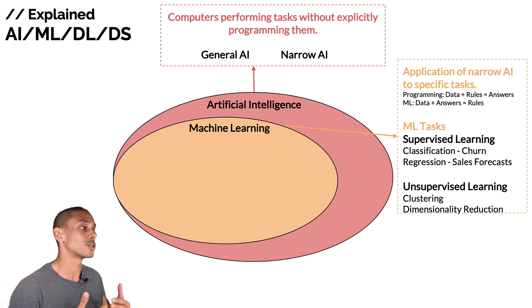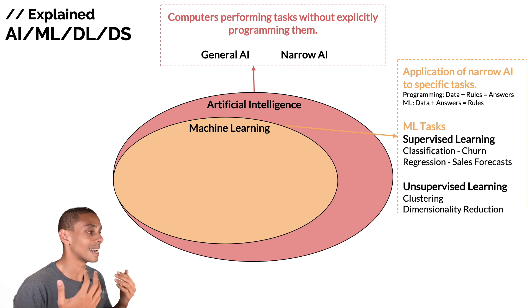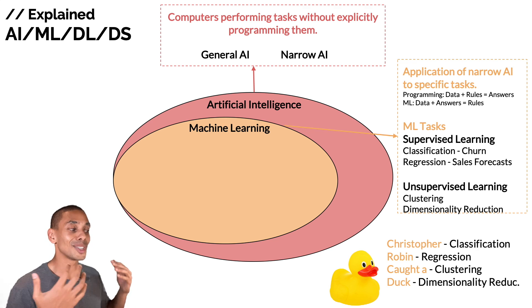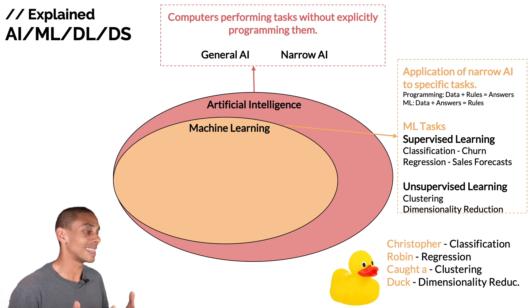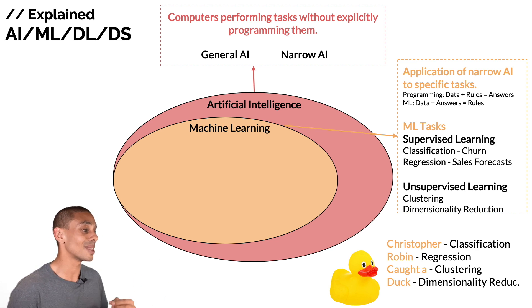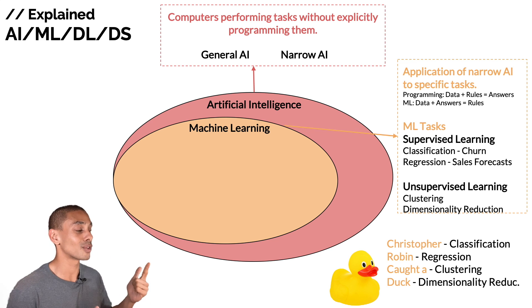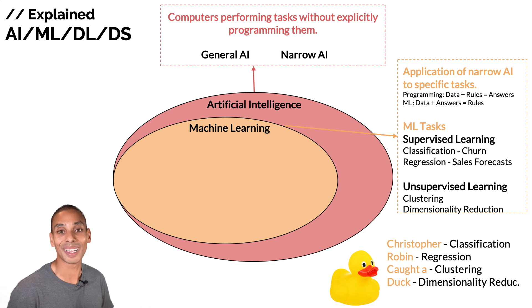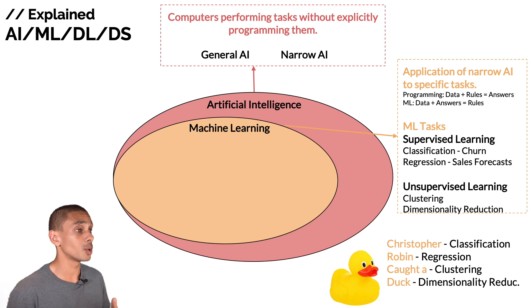To remember supervised and unsupervised learning, I'd suggest the initialism: Christopher Robin caught a duck — so you remember classification, regression, clustering, and dimensionality reduction. That takes care of supervised and unsupervised learning.